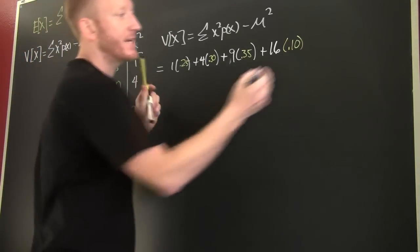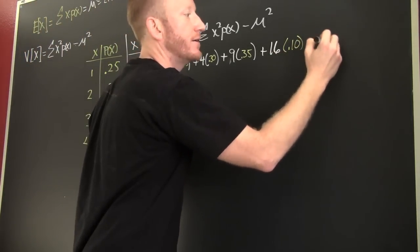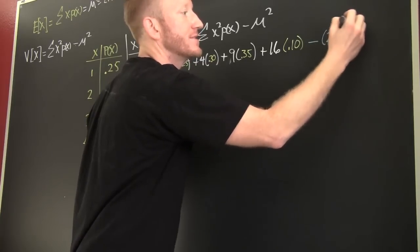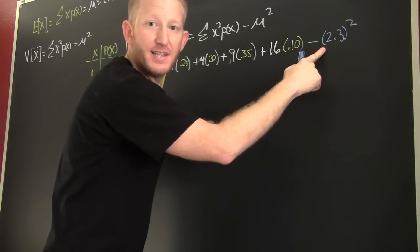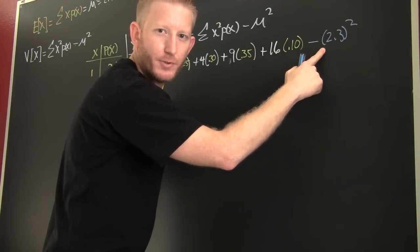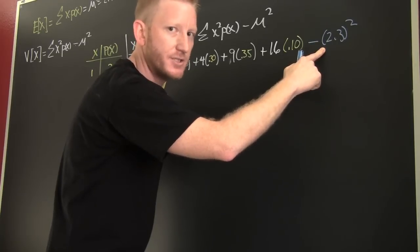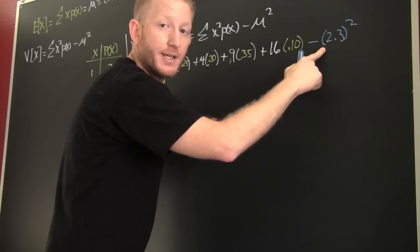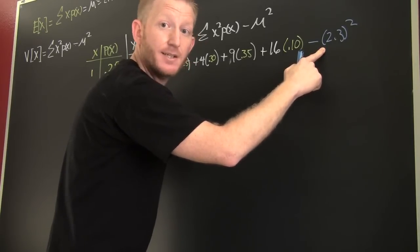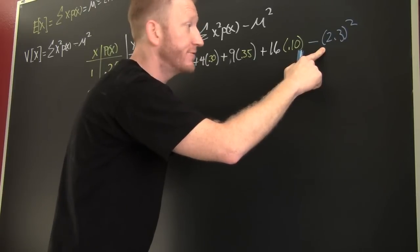And then, I'm going to take my average squared, or 2.3 squared. Now, it's been my experience that this is where people goof up. This is where people miss points. This is where people forget to subtract off. They get all excited that they remembered this sum of the probabilities times their squares that they forget to subtract off the average.